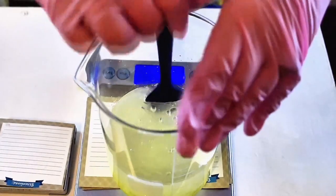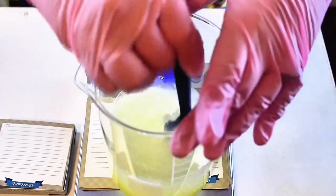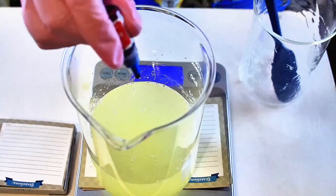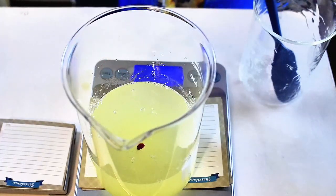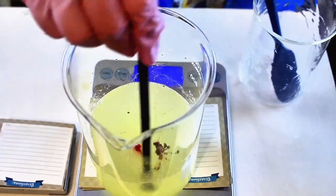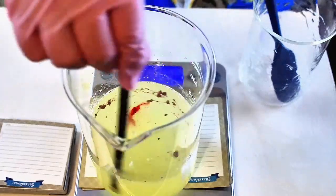Next, I added one drop of water-soluble red coloring and mixed it in. I also added some rose gold mica for that sparkly, shimmery effect.